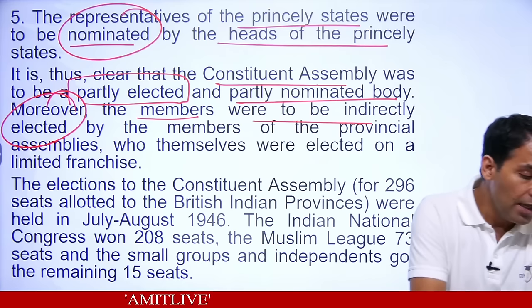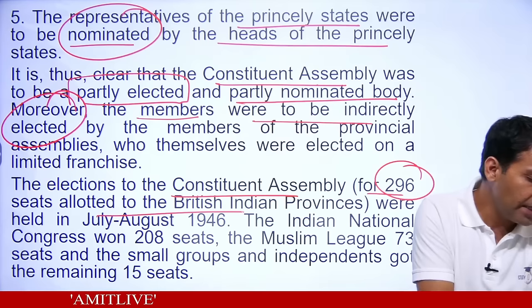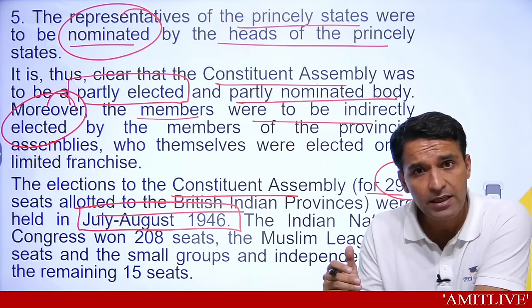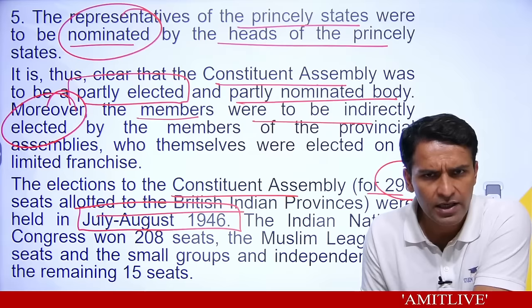The elections of the Constituent Assembly — these 296 from British India — were held in July-August of 1946. The Indian Congress won 208, Muslim League 73, and independents got 15.